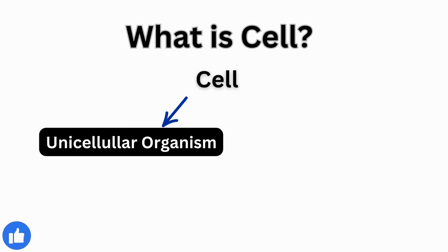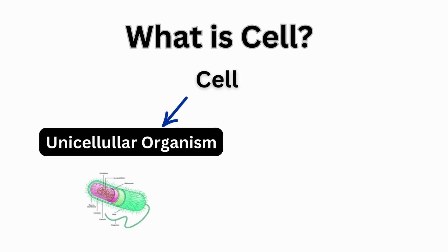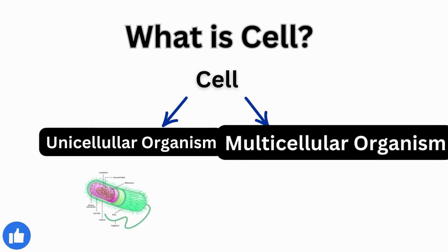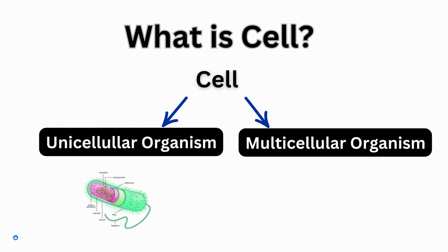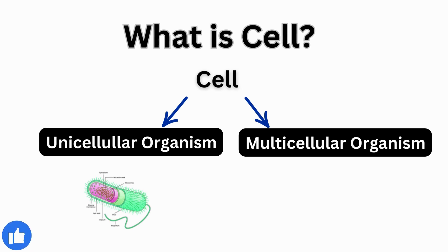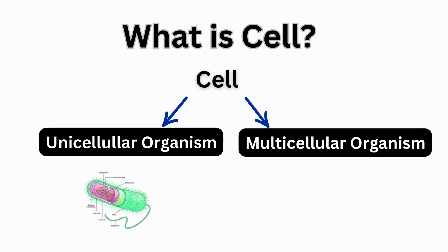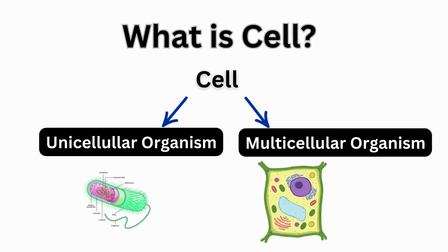For example, bacteria. Multicellular organisms are made up of multiple specialized cells organized into tissues, organs, and systems. They rely on the cooperation of cells to perform essential functions and sustain life. Examples of multicellular organisms include plants and animals.